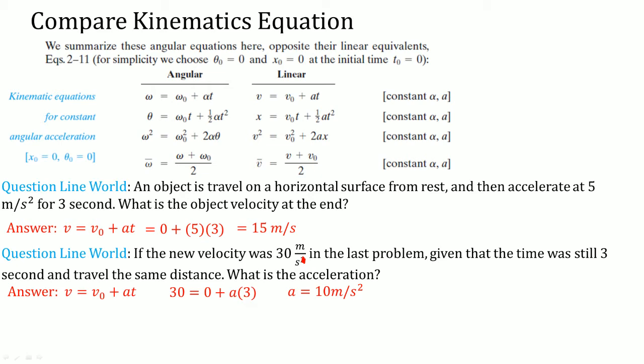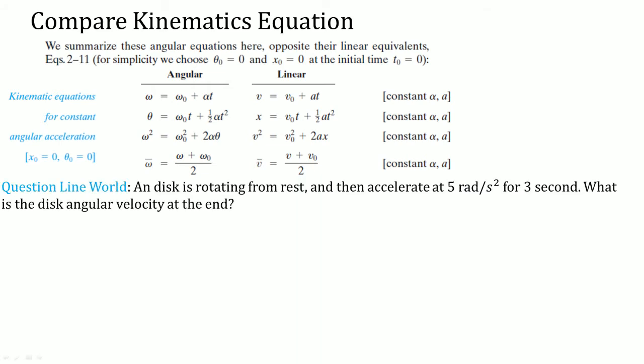It looks like this. Rather than say an object travels on a horizontal surface, it says a disk rotates. But it's both from rest. Now it's going to say it accelerates. Rather than say meters per second squared, it says 5 rads per second squared. Same time here. Now it's going to ask for the disk angular velocity at the end. So your approach is the same. You're going to use the same equation, but in the circular world, which is going to be omega equals omega naught plus acceleration angular times time. Plug in the same values. You get the same answer. The units are different. Rads per second.